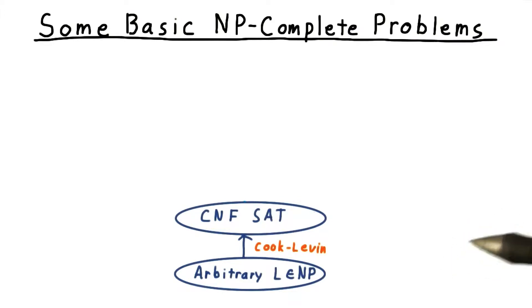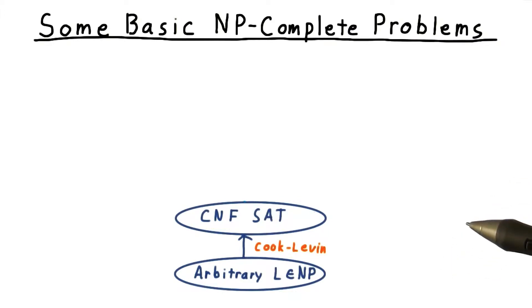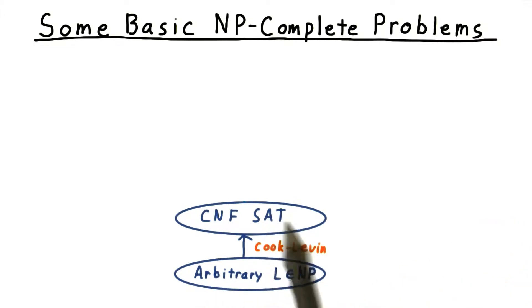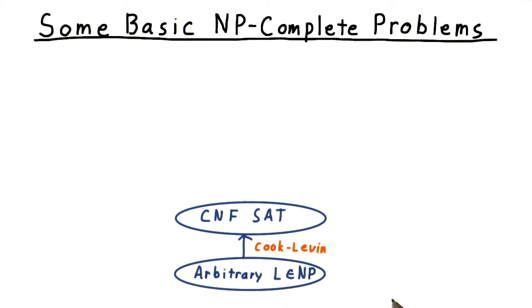Here's the state of our knowledge about NP-complete problems, given just what we proved in the last lesson. We've shown that we can take an arbitrary problem in NP and reduce it to CNF satisfiability. That's what the Cook-Levin theorem said.